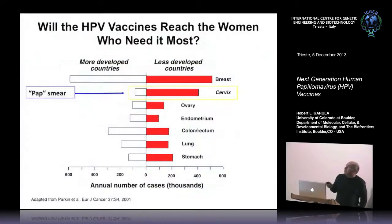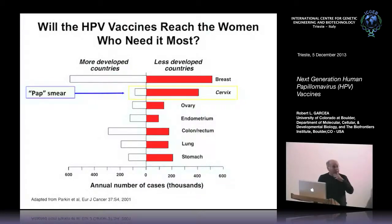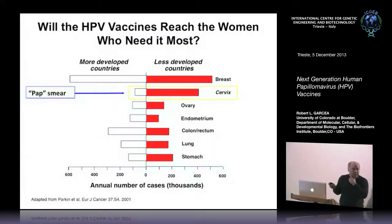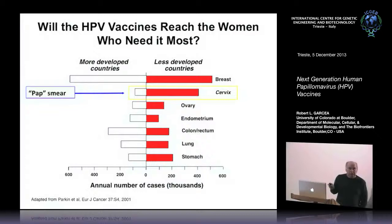Who needs HPV vaccines the most? Developed countries can afford these vaccines, but they're very expensive. In less developed countries, cervical cancer is a really big problem because there's no pap smear screening. So that's the area we want to develop next generation vaccines for, and we'll talk about the criteria — the major one being cost.